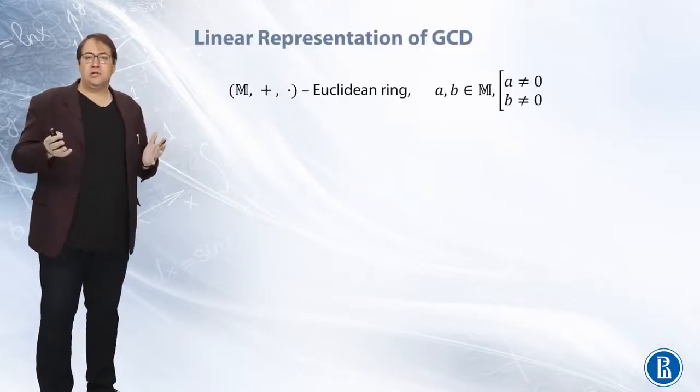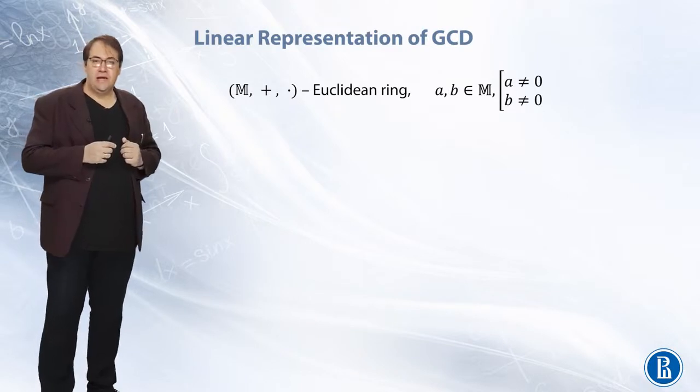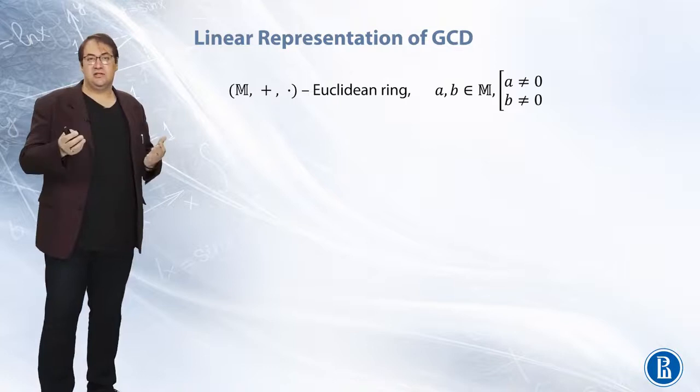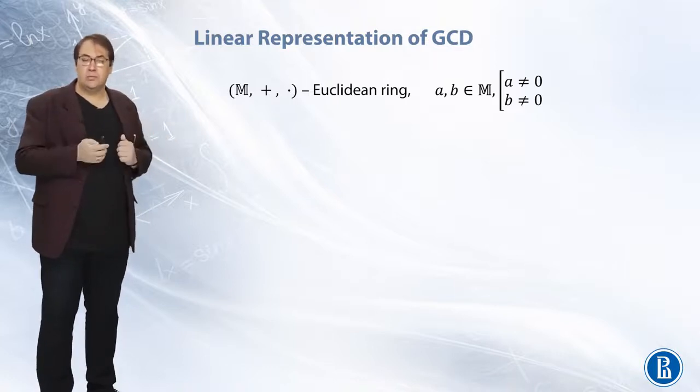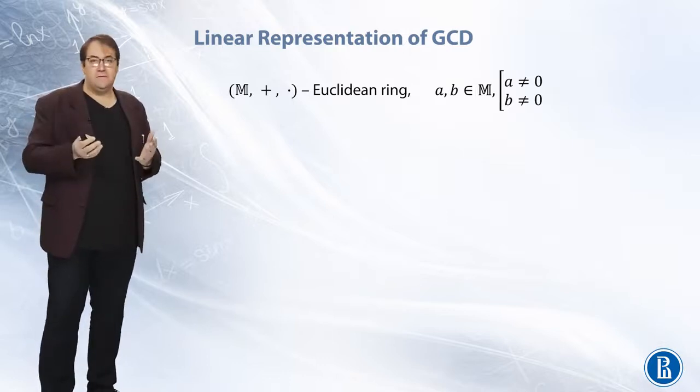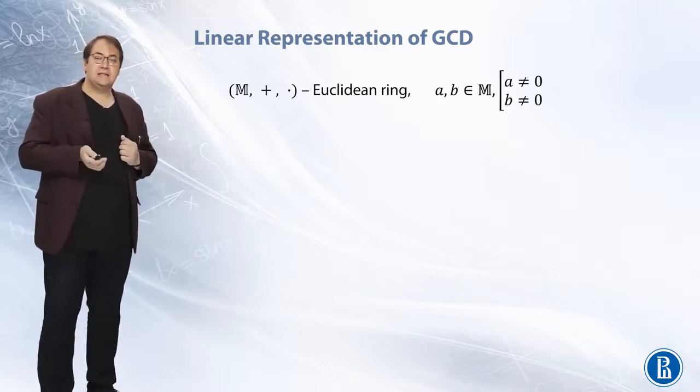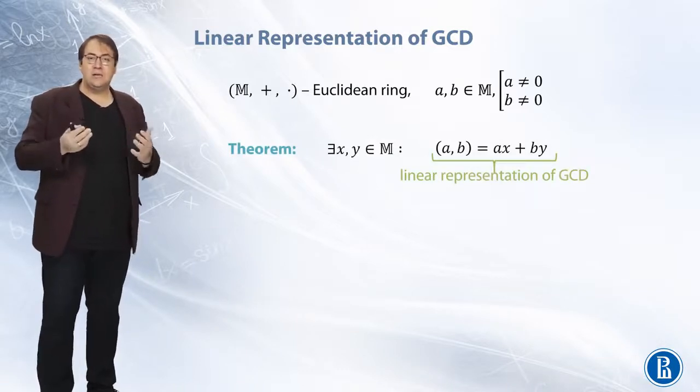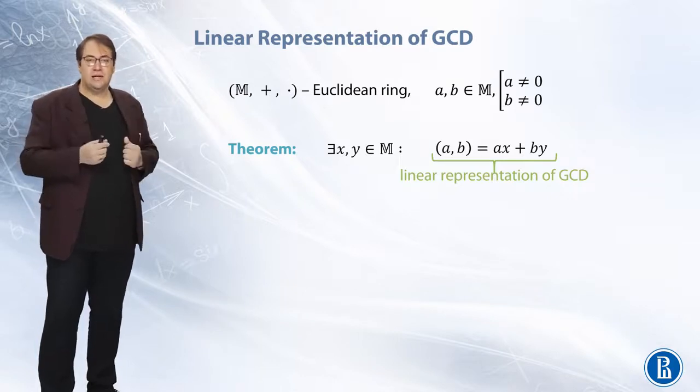Consider an arbitrary Euclidean ring and two elements a and b of this ring such that at least one of them is not zero. Then as we know they have a greatest common divisor and this greatest common divisor can be represented linearly using a and b.